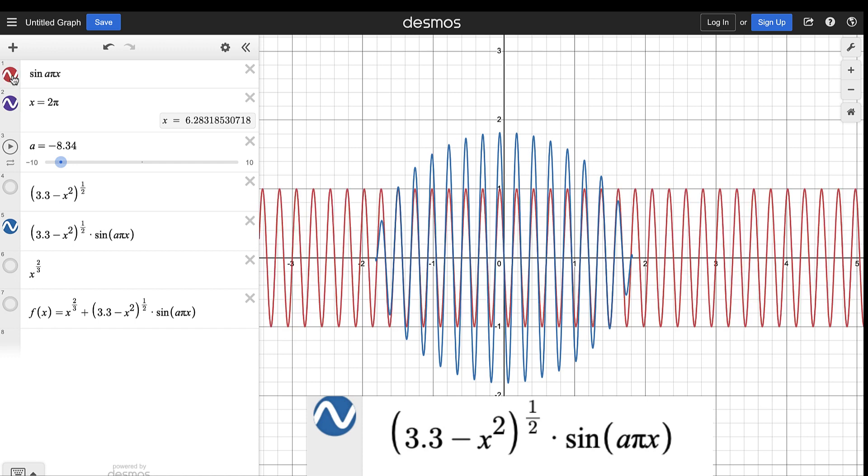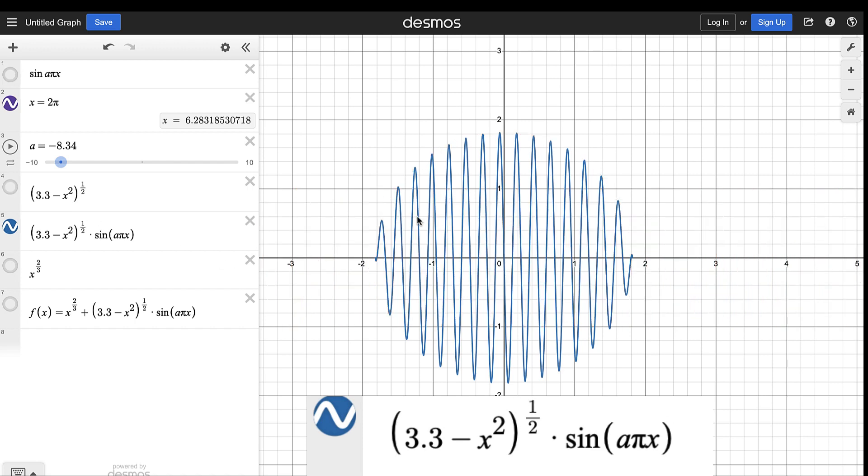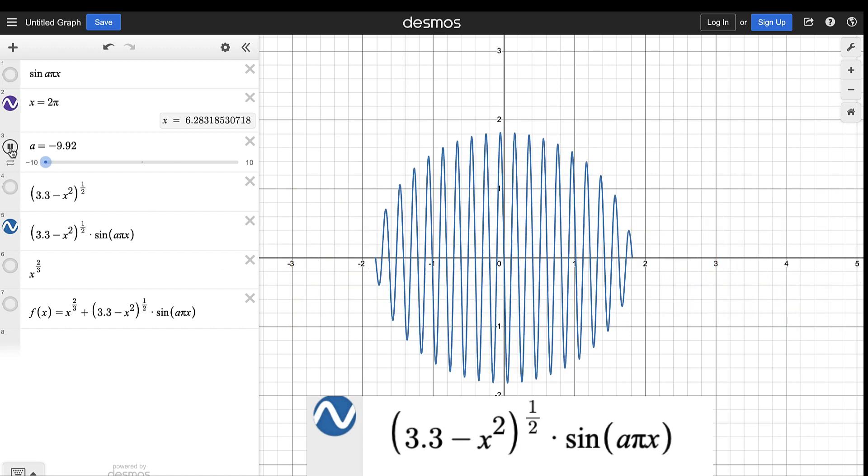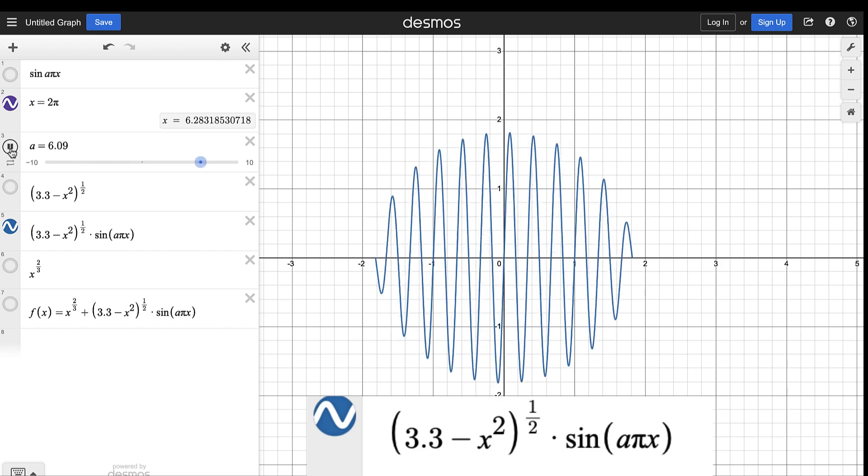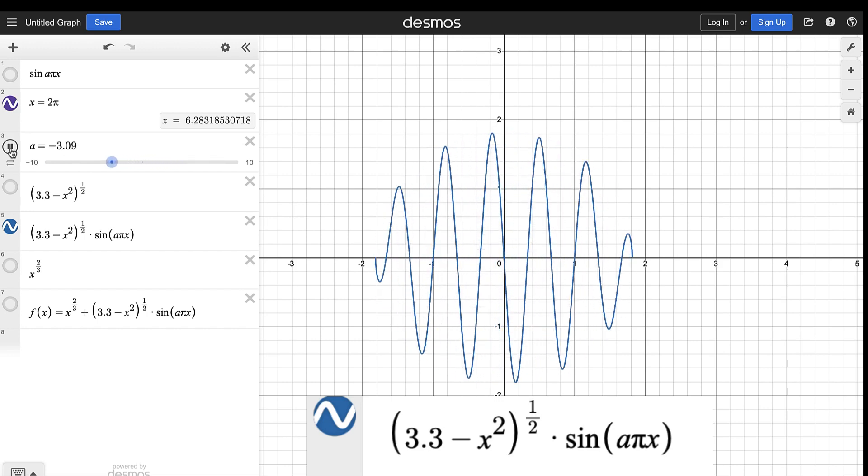So this is the sine function. This is the multiplier that we have. If we multiply this sine aπx by this expression where x varies depending on the location of the point, then we will have this shape. Let's see how the animation looks like. Now it looks like a circle. We do not see the heart shape yet.